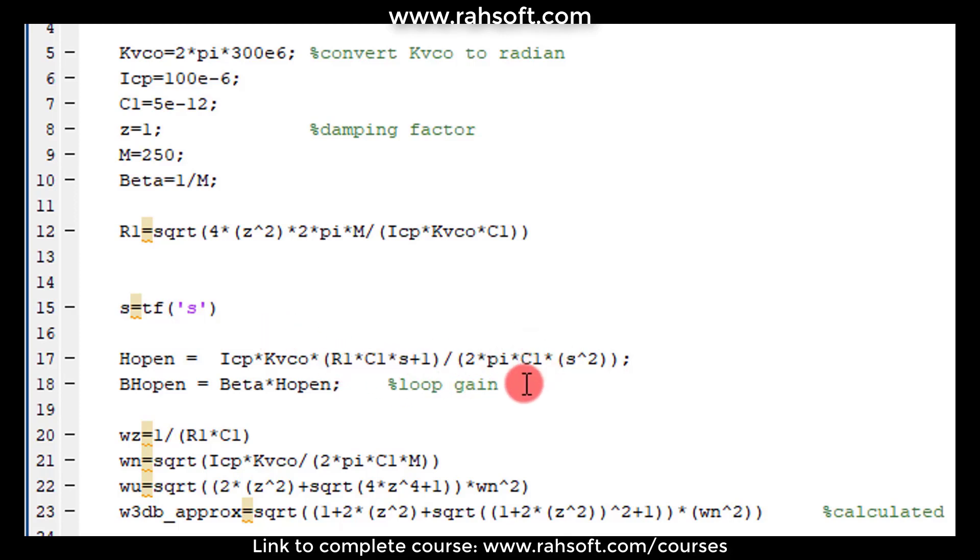You can basically define your transfer function in MATLAB using S. You just have to use this S equal to Tf of S and then you can use the same formula, the same equation in order to define your open loop transfer function and closed loop as well.